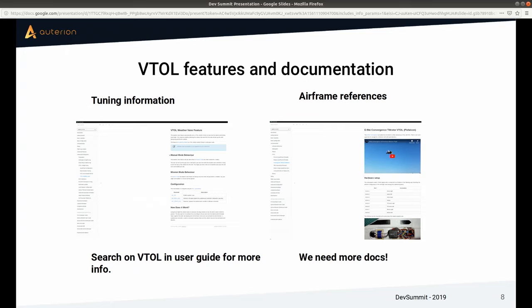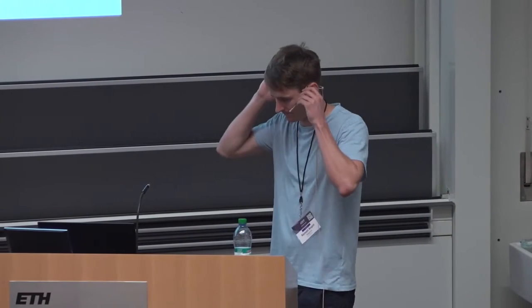Lastly, regarding documentation: we have two parts. There's tuning information for VTOL on the PX4 user guide — search for VTOL and you'll find it. The most important features are documented there, such as weather vane. We also have airframe references for VTOL that we've built. They might not always be up to date but they're a good starting point. We generally need more docs, which is always true.